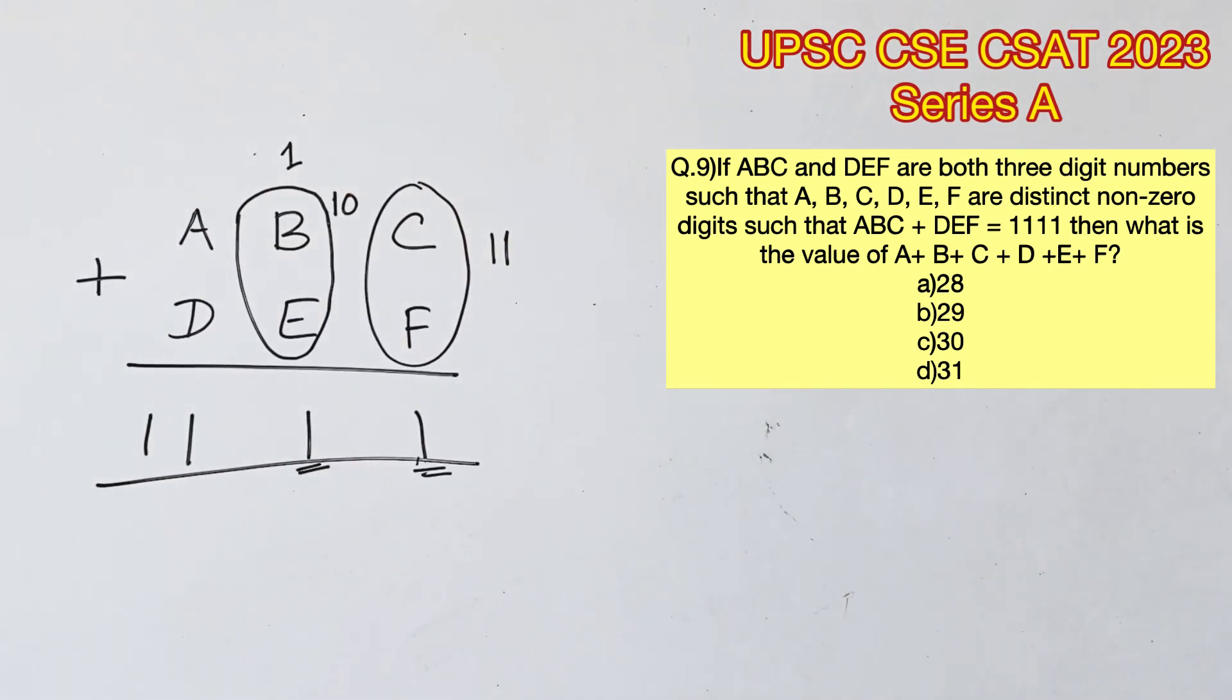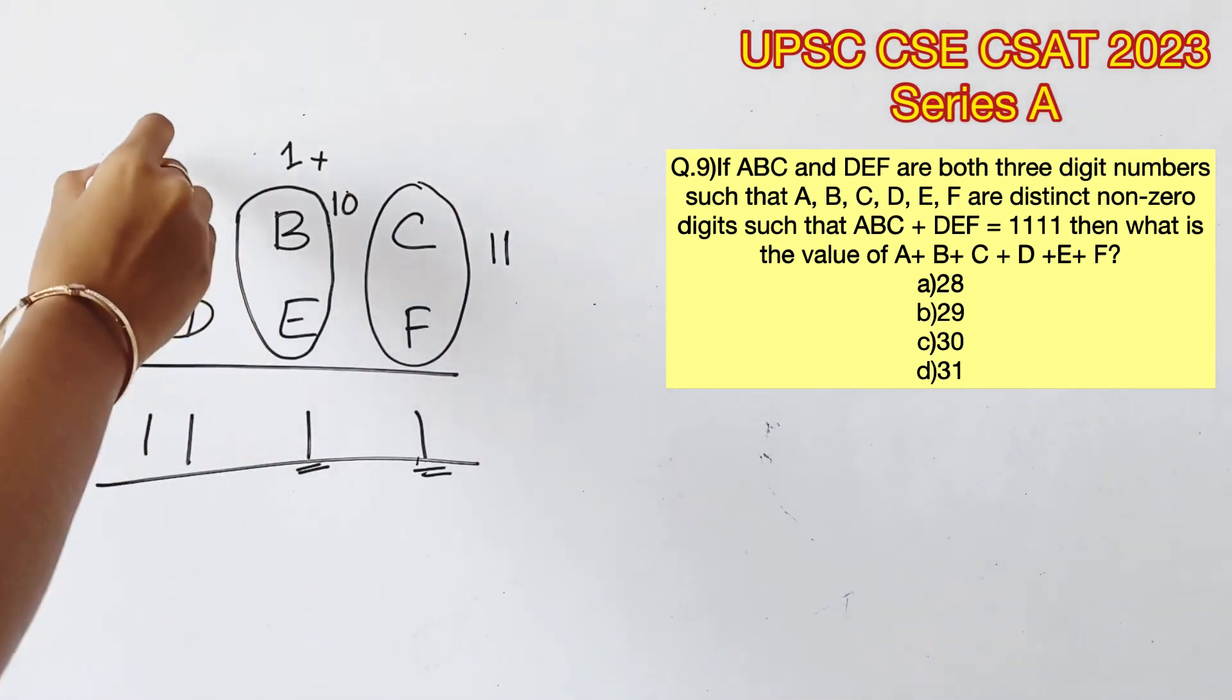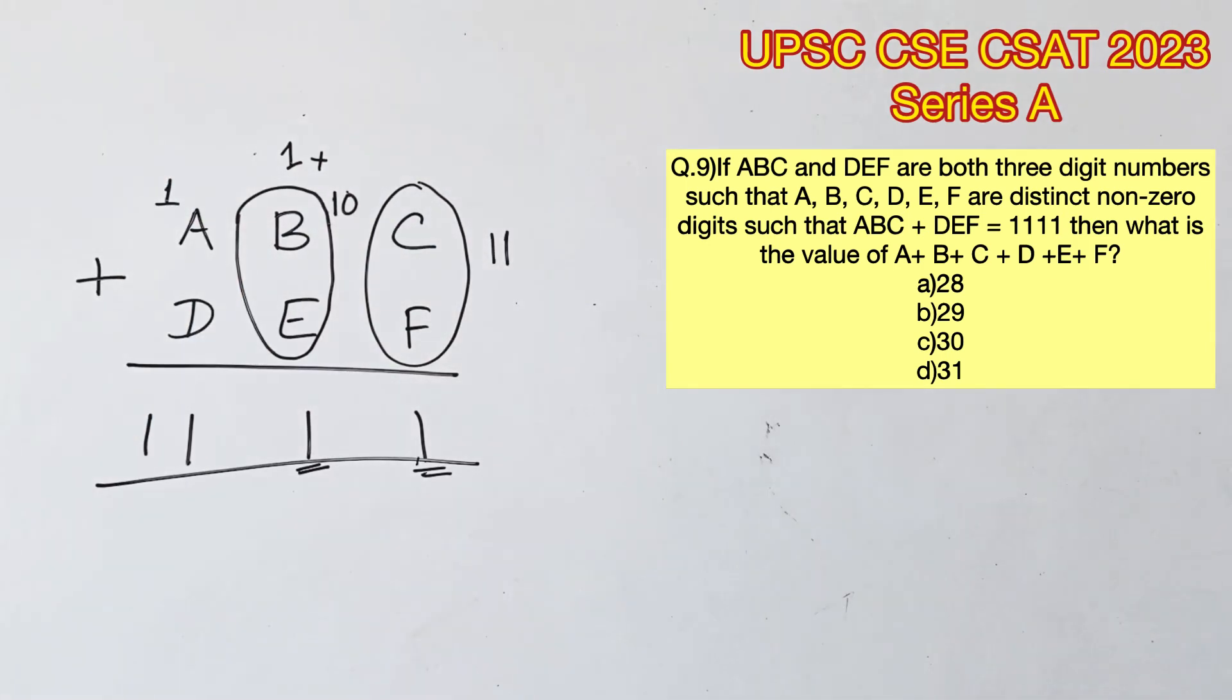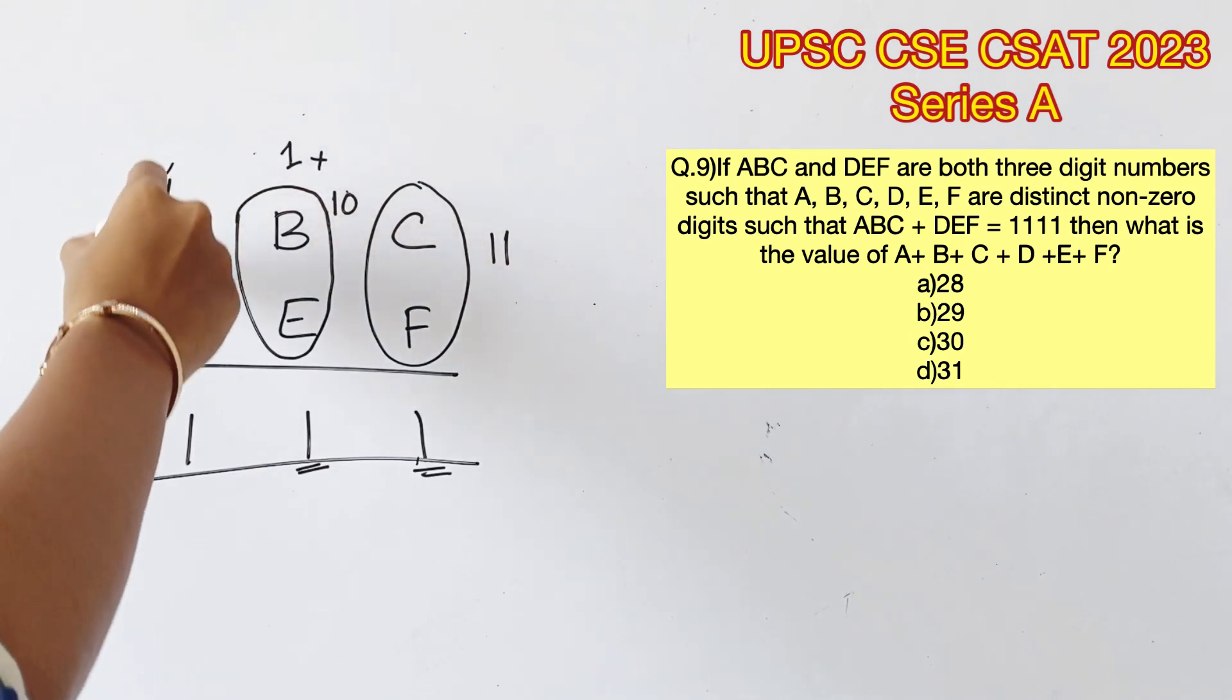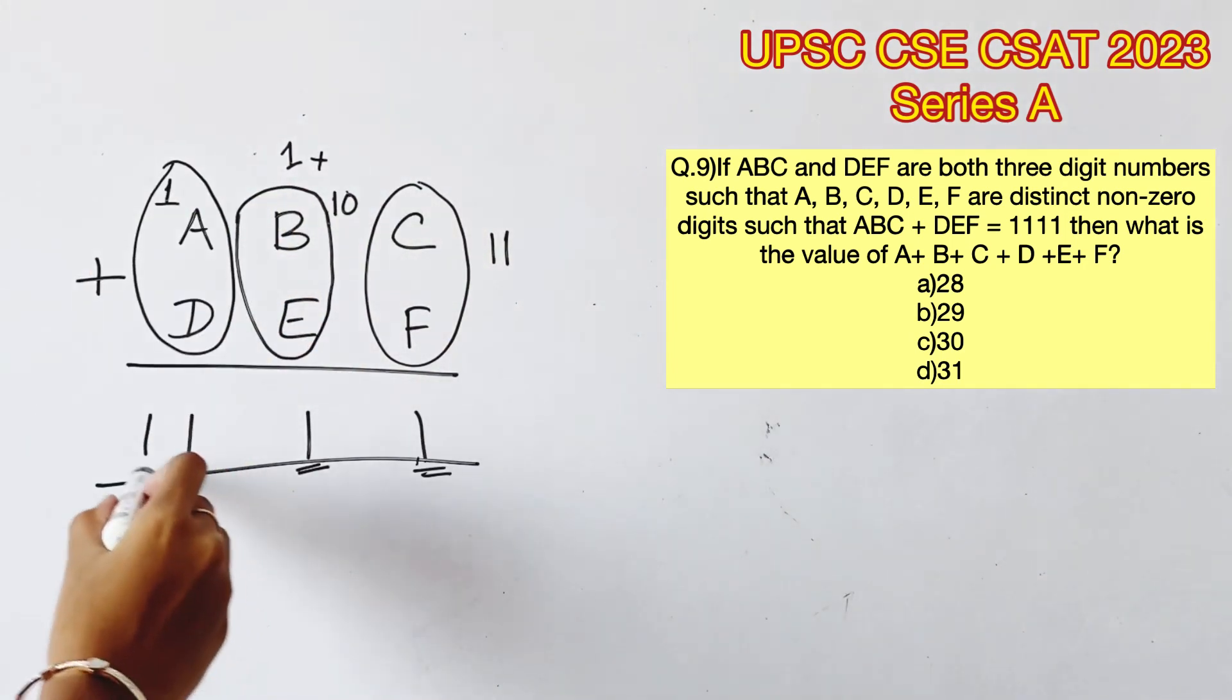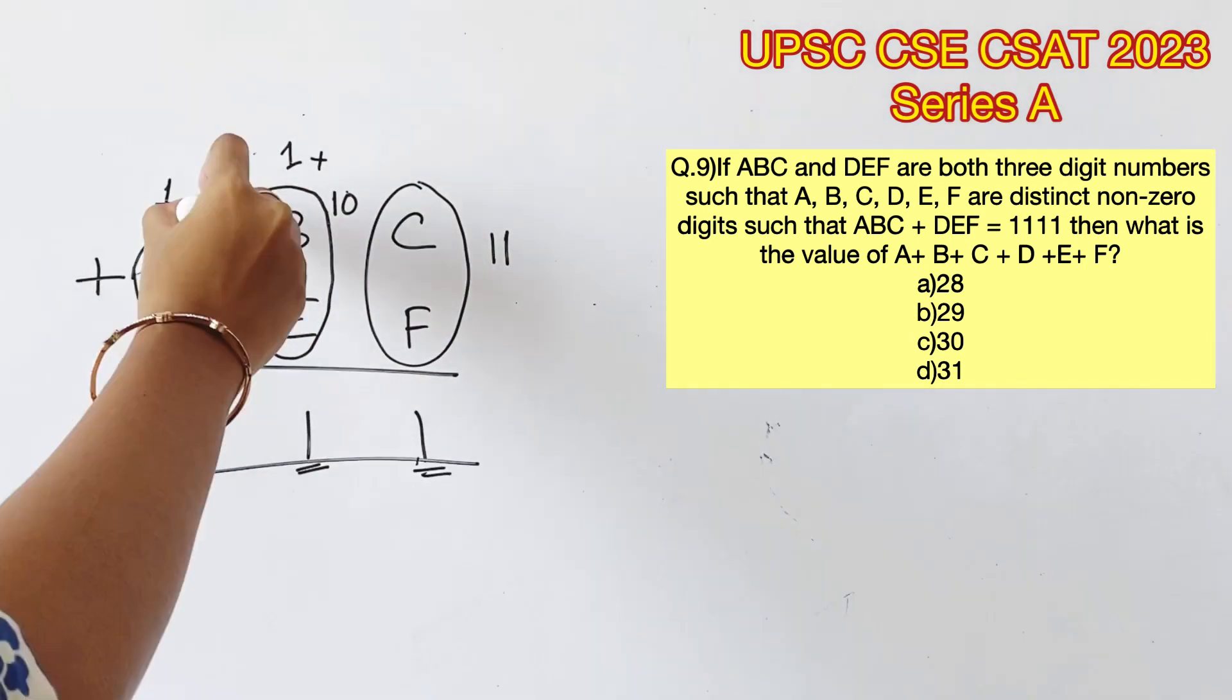Now this process is repeated again because we have 1 in thousands and hundreds place. So adding 1 plus A plus D should give us a total of 11, which means A plus D alone should give us a sum of 10.